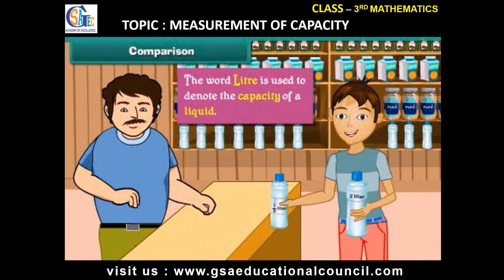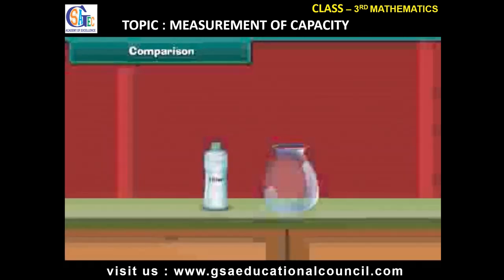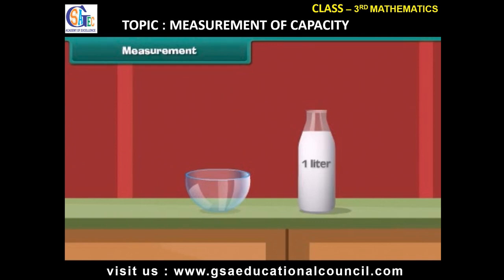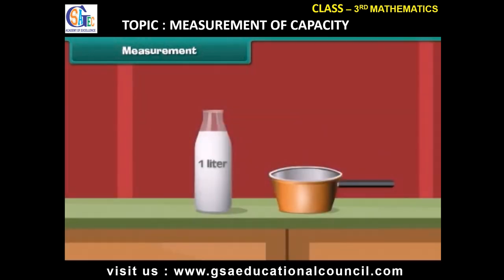Measurement: We will now pour water from this bottle into a vessel. One liter of water does not fill this vessel, so this vessel holds more than one liter of water. Similarly, pouring water into these other vessels shows they also hold more than one liter of water. When we pour milk from a one-liter bottle into this bowl, milk is still left in the bottle, meaning this bowl holds less than one liter of milk. Similarly, this pan holds less than one liter of milk.